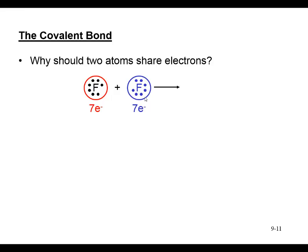Since neither fluorine wants to lose an electron but both would like to gain one, they can overlap their outer orbitals. One orbital on each is half filled, and if we overlap these half-filled orbitals, we form a covalent bond. Showing the two fluorine atoms in close proximity, the two electrons shown between them indicate a single covalent bond. Electrons in covalent bonds count toward the total valence electrons for both atoms.